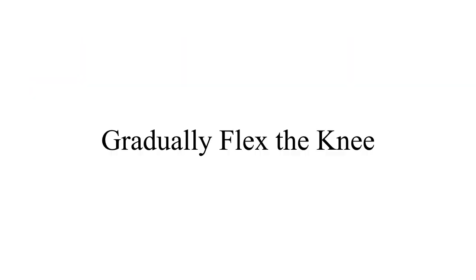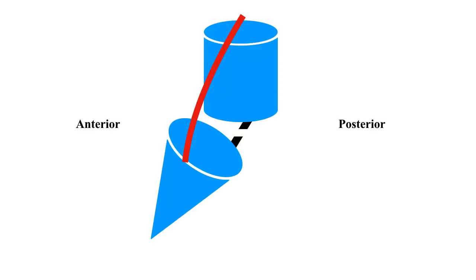With the leg held in internal rotation and valgus stress as described, the knee joint is then gradually flexed. This pictorial representation of the sagittal view will help you understand what happens during gradual flexion. The blue cylindrical part above is the lateral aspect of the thigh, the blue conical part below is the lateral aspect of the leg, the red structure is the iliotibial band, and the black structure is the torn anterior cruciate ligament.